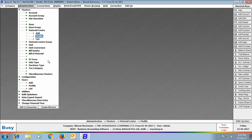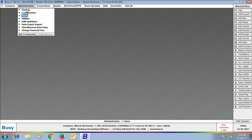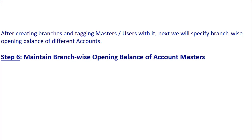We have now covered the first five steps: creating the branch and setting up Voucher Series Group, Users, Material Centers, and VAT/GST details. In the sixth step, we maintain branch-wise opening balances of account masters. You can specify a different opening balance for different branches, and the combined total of all branches will appear as the opening balance at the head office.